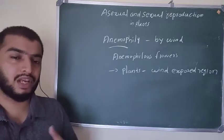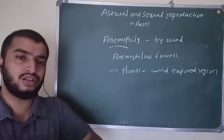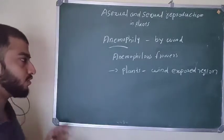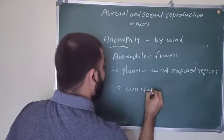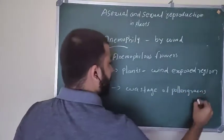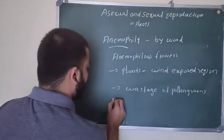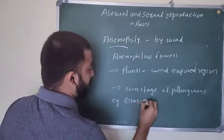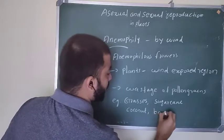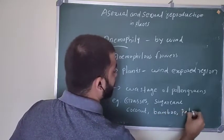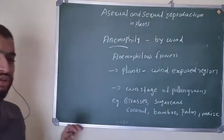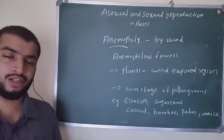To overcome this problem, those plants which show anemophily produce a large number of pollen grains to reach the target flower. So there is wastage of pollen grains also seen. Examples of plants which show anemophily: mainly grasses, sugarcane, coconut, bamboo, palm, and maize.